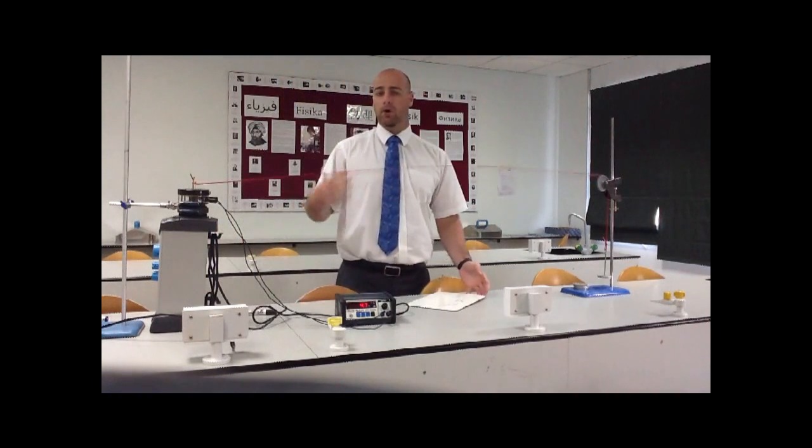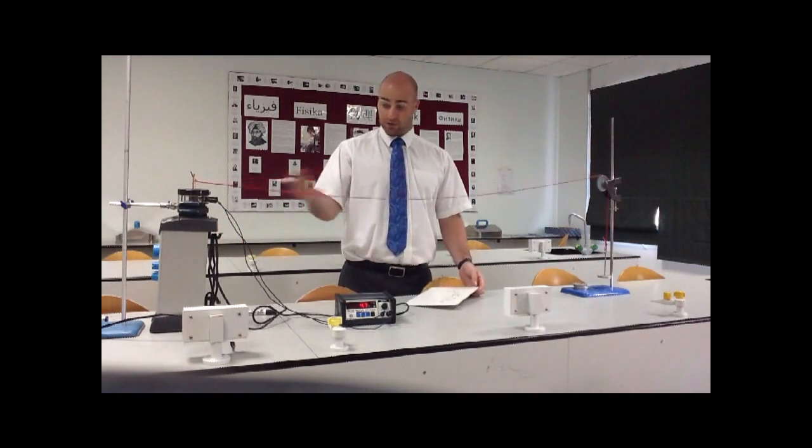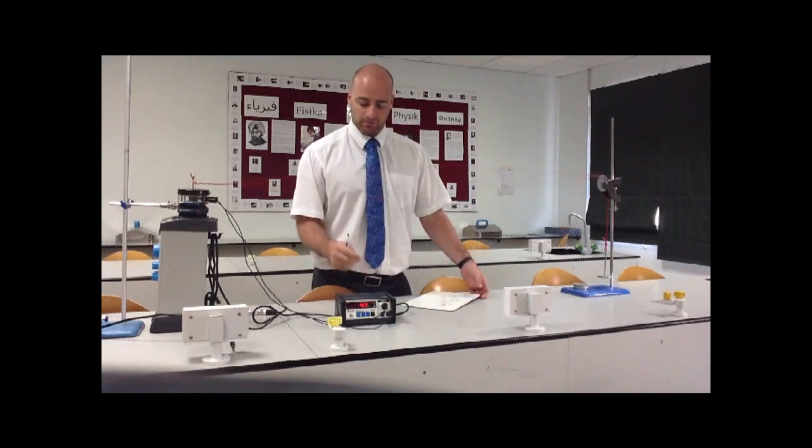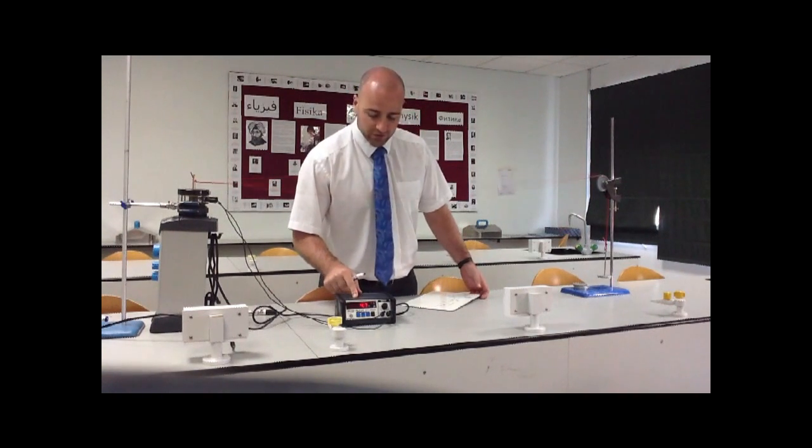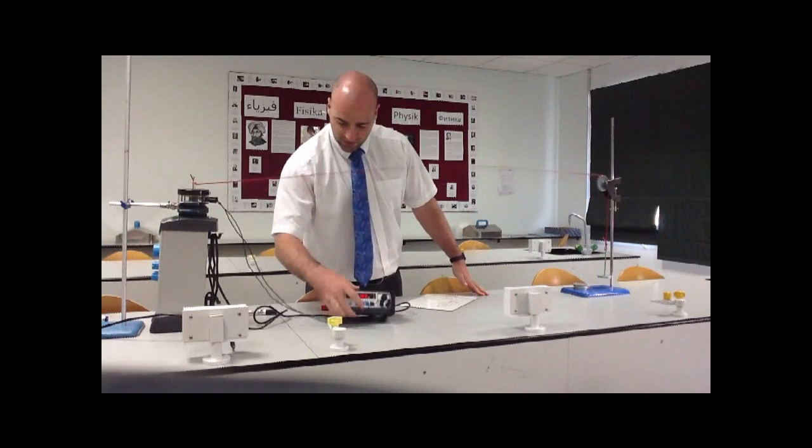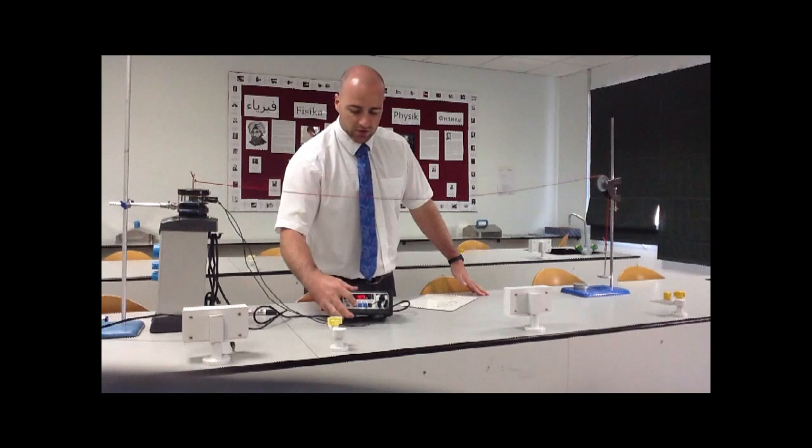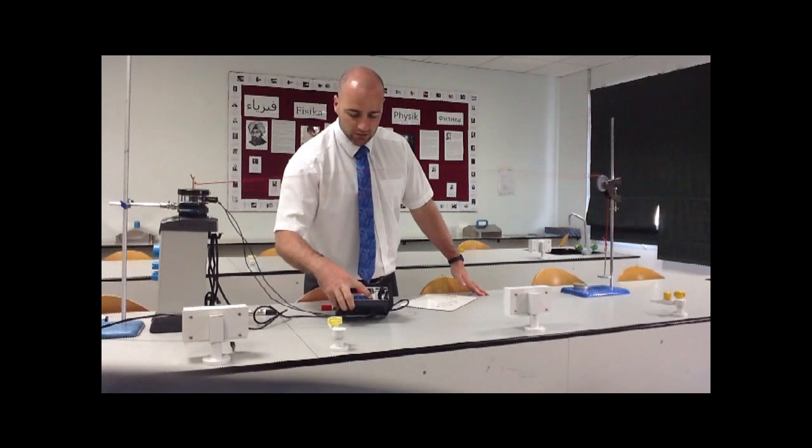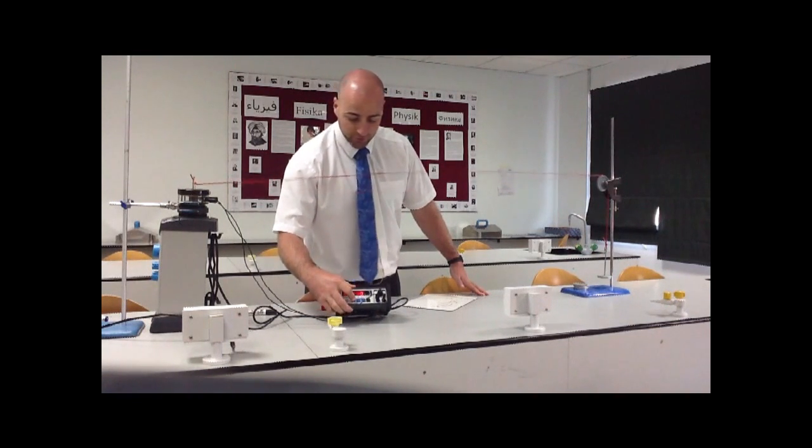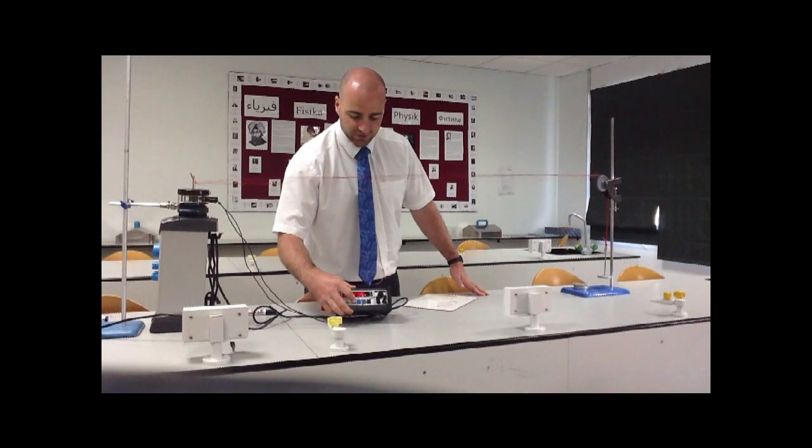If I want to find what's called a harmonic, the fundamental frequency is known as the first harmonic. What I need to do is find an integer multiple of this frequency here. I've got 4.7 Hz, and if I times 4.7 by 2, I get 9.4. I'm going to increase the frequency up to 9.4 Hz and we should be able to find the second harmonic.